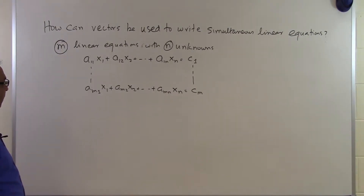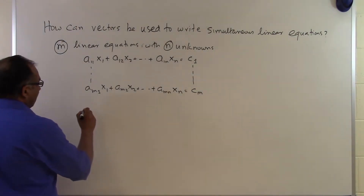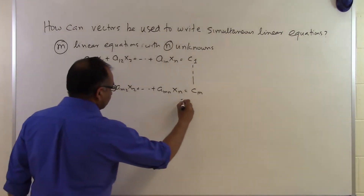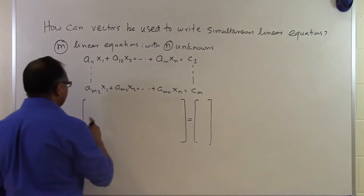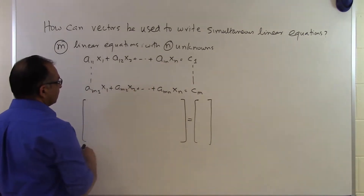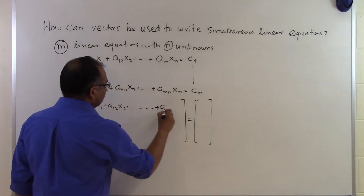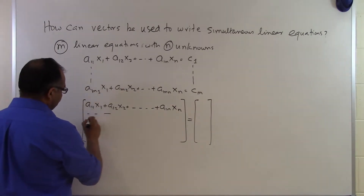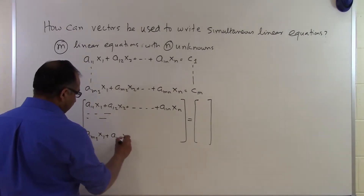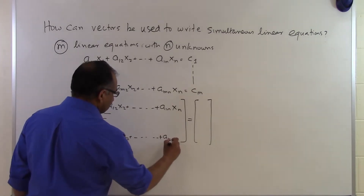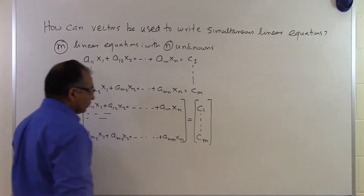How can we write these in vector form? What I'm going to do is put one vector equal to another vector. In this vector, I'm going to put a11x1 plus a12x2 plus all the way up to a1nxn as the first entry, then the second entry, third entry, and the mth entry will be am1x1 plus am2x2 plus amnxn. And on the other side I'll have c1 all the way up to cm.